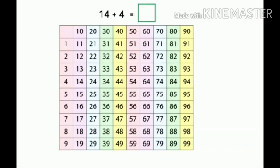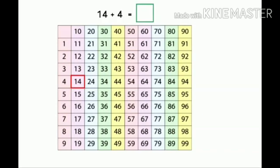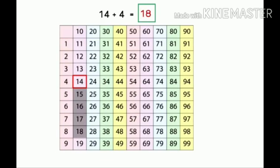14 plus 4. We start at 14 and then we count 4 numbers forward: 15, 16, 17, 18. Children, where did we reach? 18. So, that is our answer. 14 plus 4 is equal to 18.